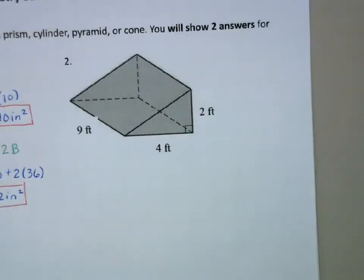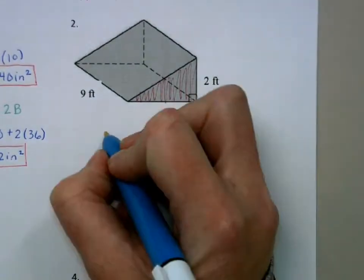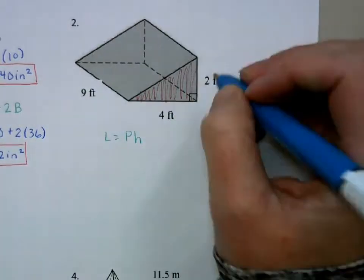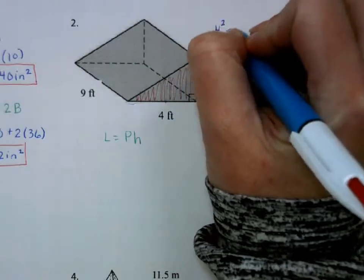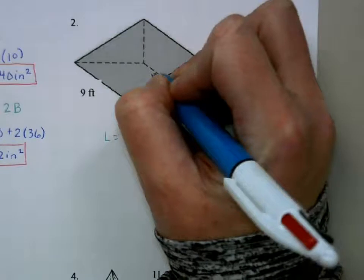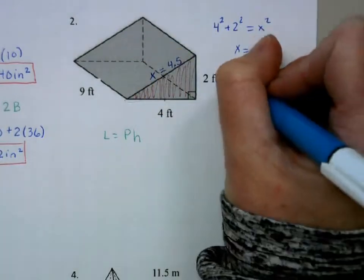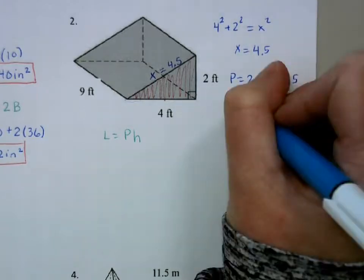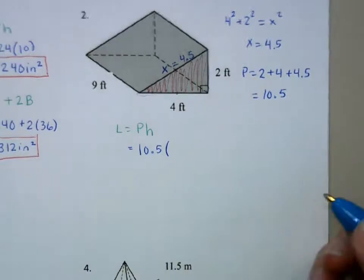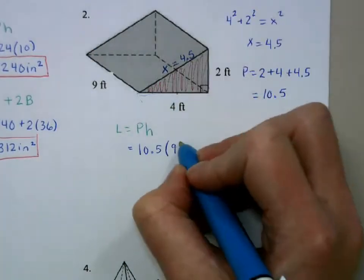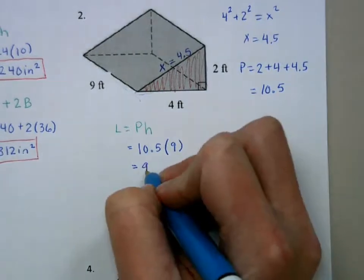Our next shape is a triangular prism. The base is this triangle. Using the same formulas, the lateral area is pH. The perimeter is going to be 2 plus 4 plus the hypotenuse of the right triangle. We need to use the Pythagorean theorem to find that — when you do that work, we get 4.5 for that hypotenuse. So the perimeter is 2 plus 4 plus 4.5, which is 10.5. So we have 10.5 times the distance between the bases, which is 9, giving us 94.5.